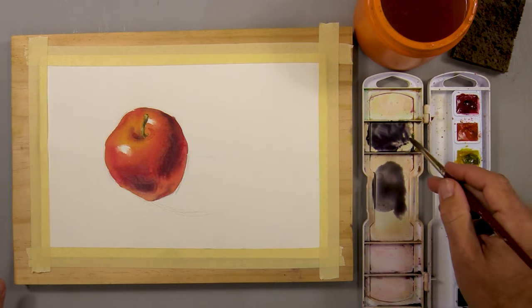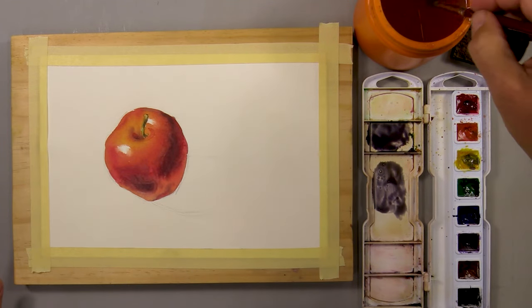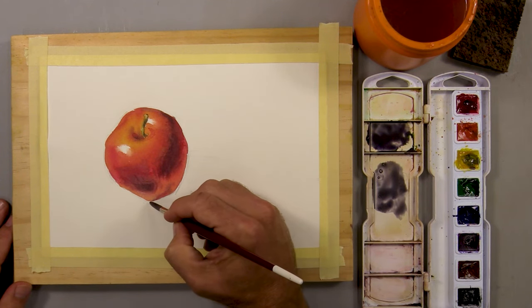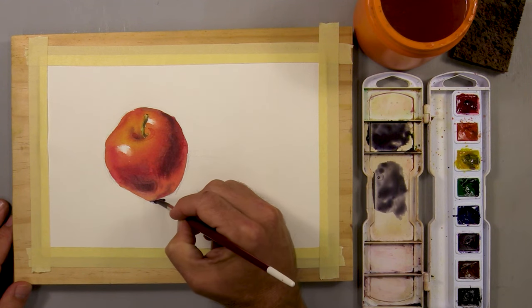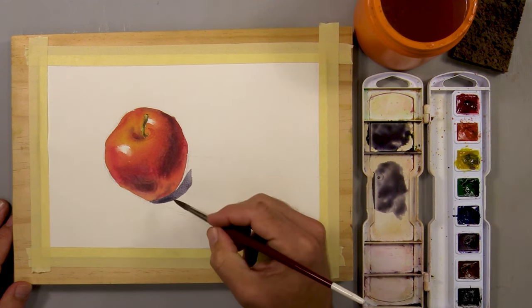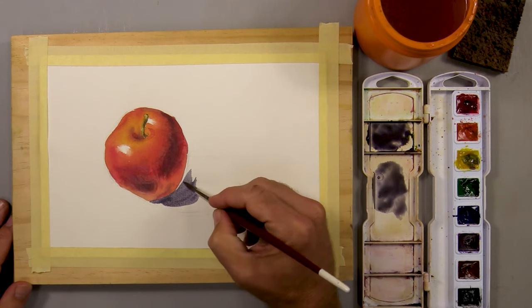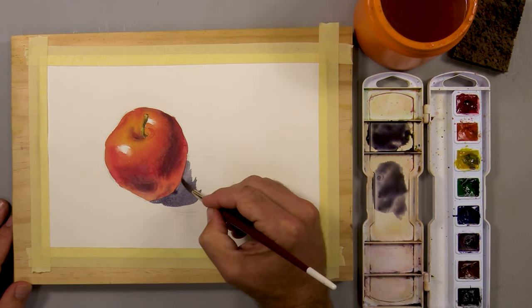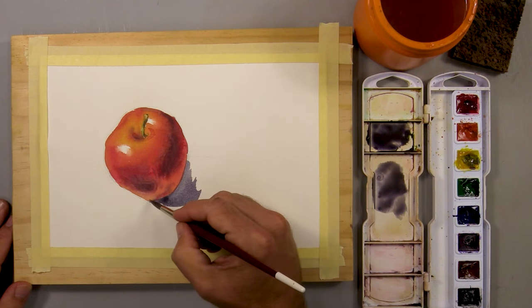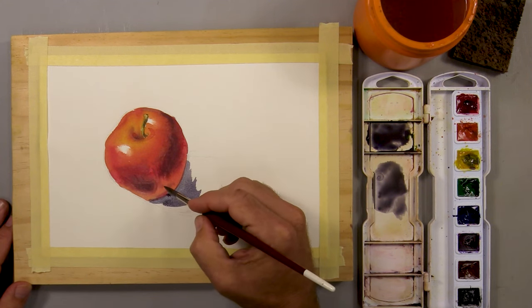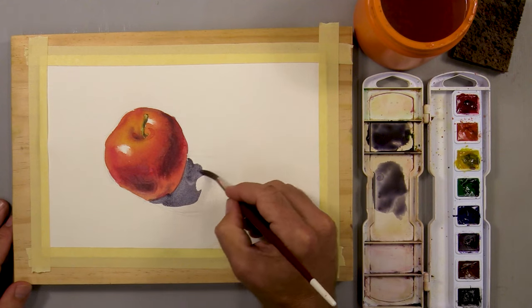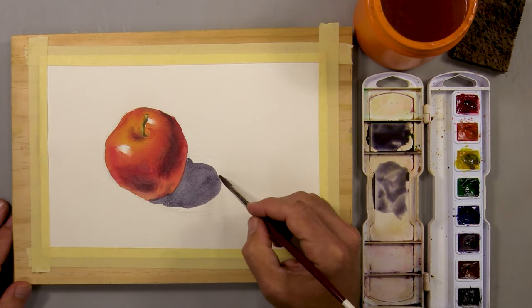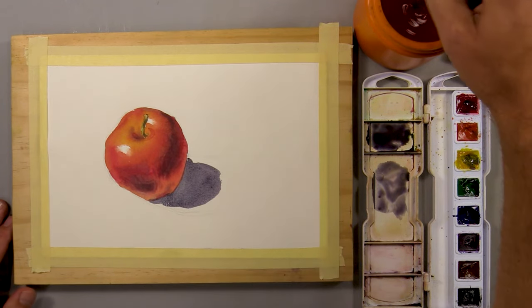I start with my lighter of the two colors, my lighter neutral color. I carefully paint along the bottom edge of the apple and along the bottom right side. And then I add more color away from the apple until I have the shape of the cast shadow painted in. But I leave a little bit of blank paper out toward the right edge of the cast shadow that's furthest away from the apple. That's where I'm going to soften the edge.